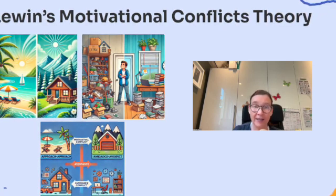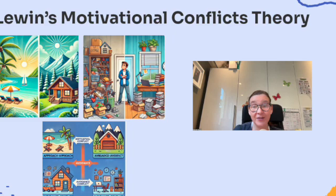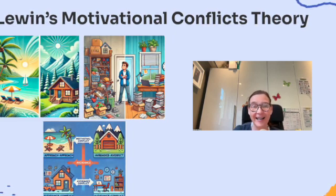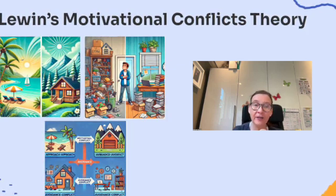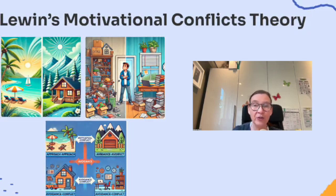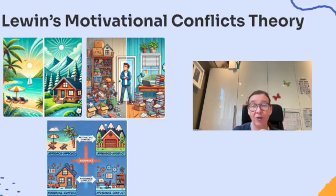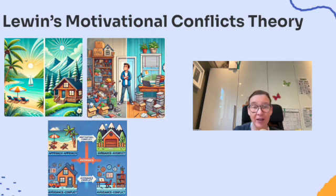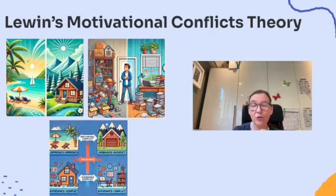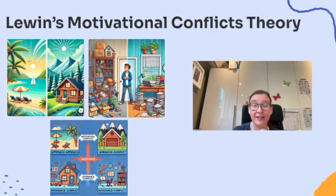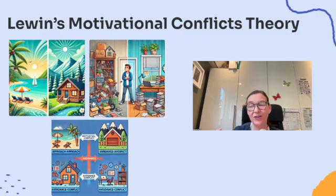The second is approach-avoidance conflict, where one option has a positive and a negative aspect. For example, being offered a high-paying job that's far from family — the money is great (positive) but the distance is tough (negative), so you feel conflicted. Finally, avoidance-avoidance conflict happens when you're stuck choosing between two undesirable options, like deciding between cleaning the garage or doing really difficult homework — neither sounds fun, but you have to choose one.